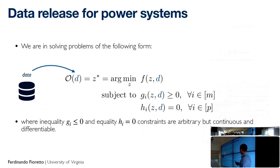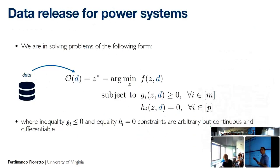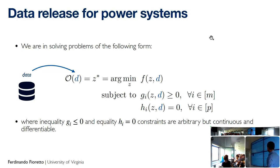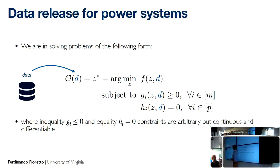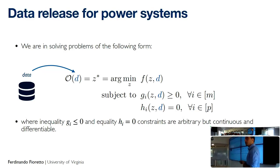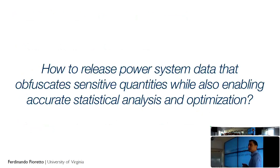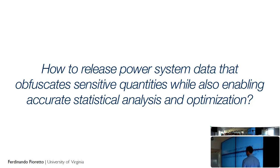In general, when releasing privacy-preserving datasets in these contexts, we're not just running statistical queries — we're interested in solving optimization problems. These problems may have the form of minimizing an objective parameterized by input data with constraints parameterized by input data. In power systems, the input data might be loads, which are sensitive and parameterize the right-hand side of inequality constraints. So how do we release power systems data while attaining differential privacy, allowing both statistical analysis and optimization to be performed?